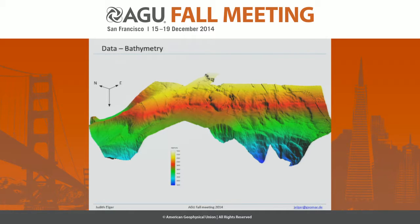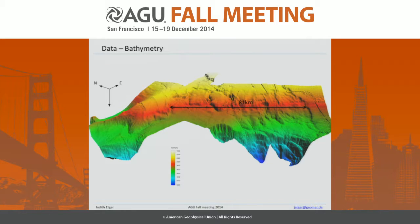This is a bathymetry map of the area. North is in this direction. You can see that it's an area about 81 kilometers by 25 kilometers, with a water depth of 1 kilometer to 2.5 kilometers, in which we have scarps and alignments in the bathymetry. There's evidence that we have a lot of landslides.